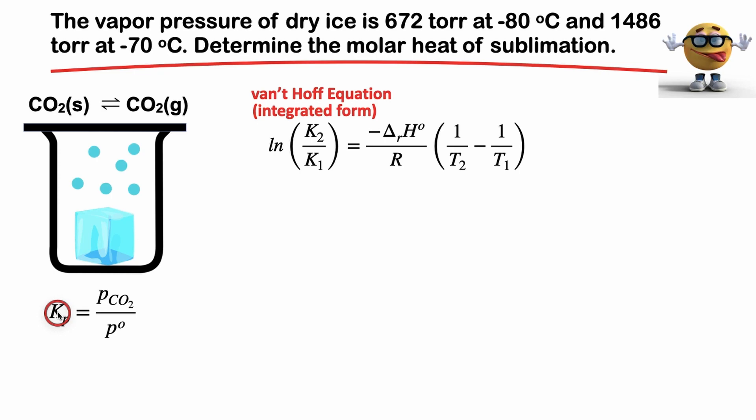And the equilibrium constant is equal to the activities of the products over the reactants. We'll assume that the activity of this is 1, so that the equilibrium constant is, and this is P is for pressure, is equal to the pressure of the CO2 divided by the standard pressure. This standard pressure is very important to include, okay? This is one bar, standard pressure of one bar. We need it in here. We just can't use this pressure right here.